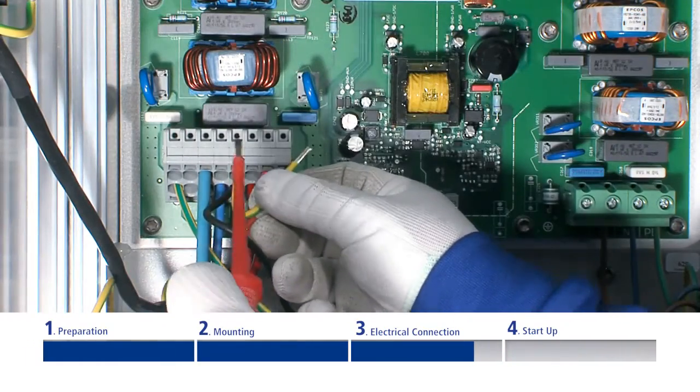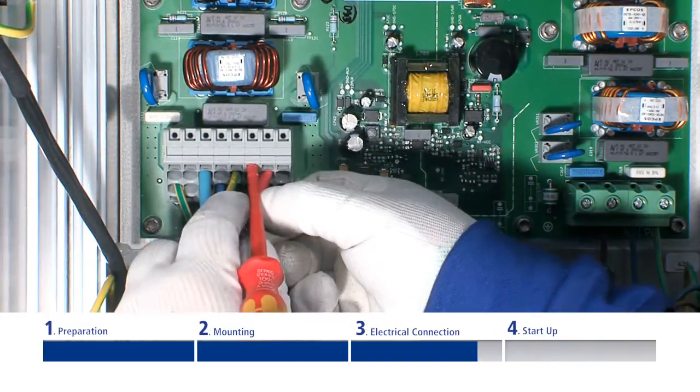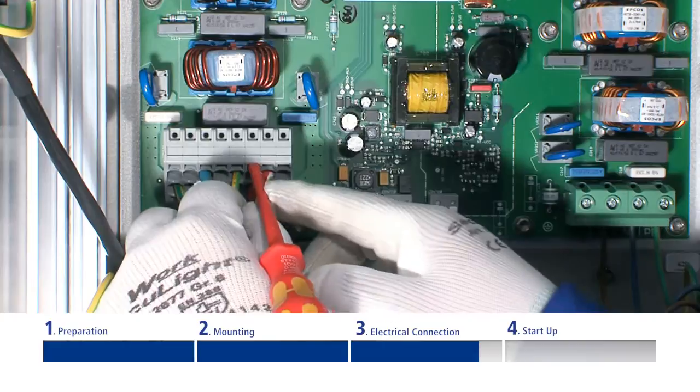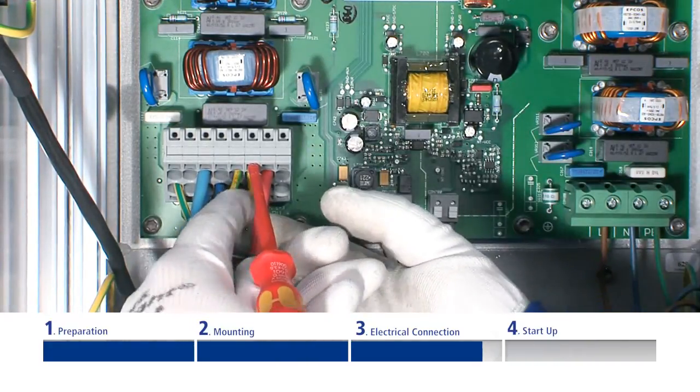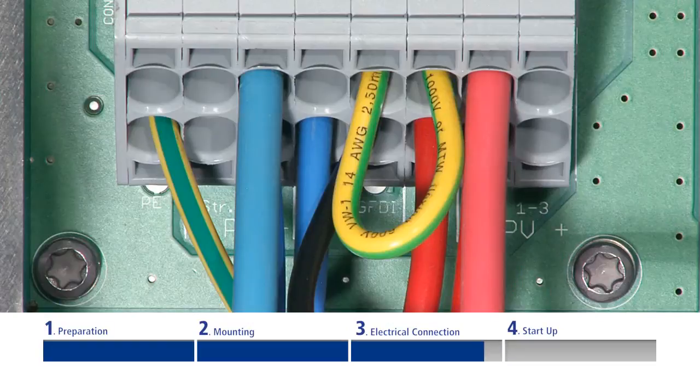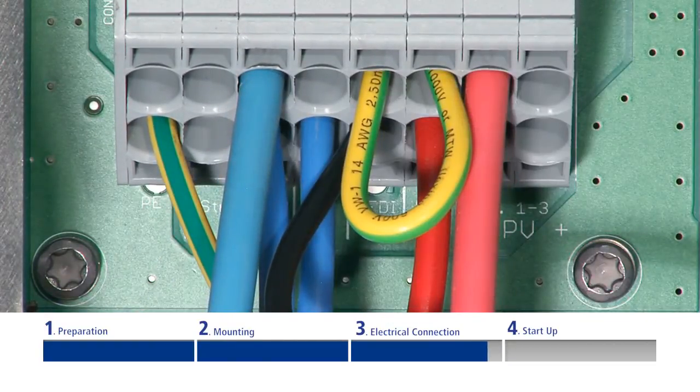Clamp the enclosed cable bridge in the upper GFDI terminal and the DC plus or DC minus terminals depending on whether positive or negative earthing is required. Earthing monitoring is to be activated after startup via the display.